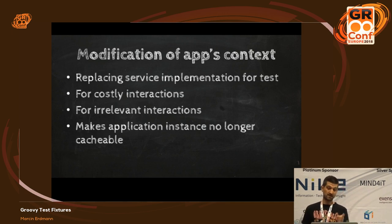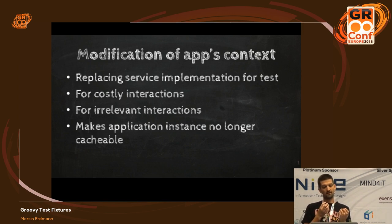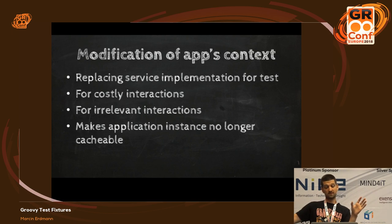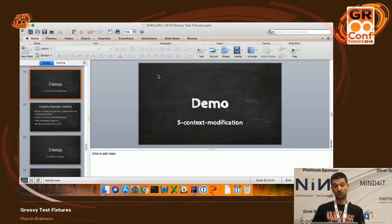One thing to note: if you start changing the application under test context, your application under test fixture is no longer cacheable. Because you've changed the internals of the application, it's effectively a different instance. So you either cannot cache anymore, or you have to have two instances — one with mocked-out interactions and one hitting the real service. Let's look at how this is done in Spring Boot.